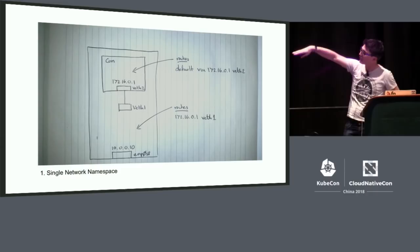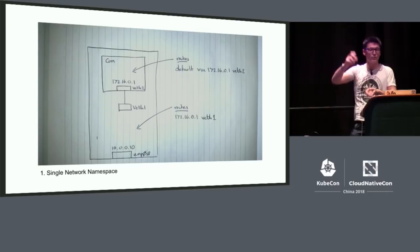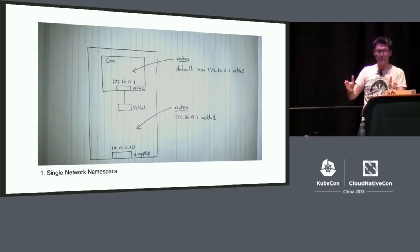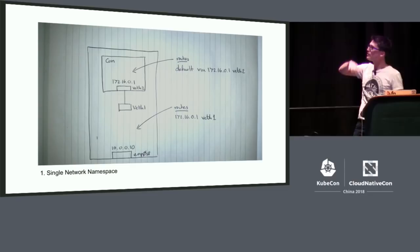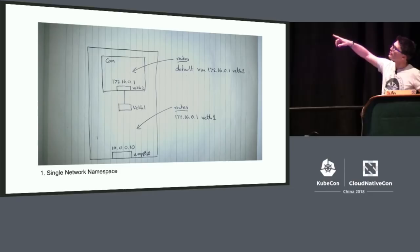We give the interface inside the container an IP address — 172.16 — so it's a different network than the host. The final piece of the puzzle is to set up some routing rules. On the host, there's a simple routing rule saying: if you want to go to that IP address 172.16.0, send it straight to the VEth1 interface. Inside the container, there's only one interface, so we just need one default rule which routes everything back out again.